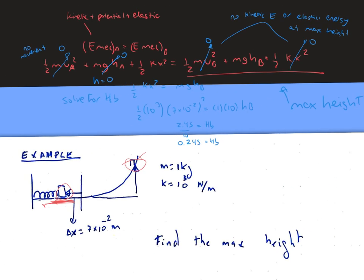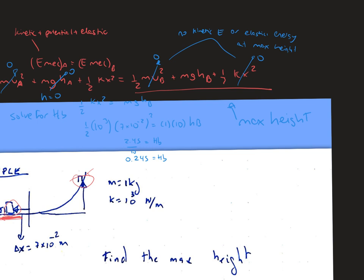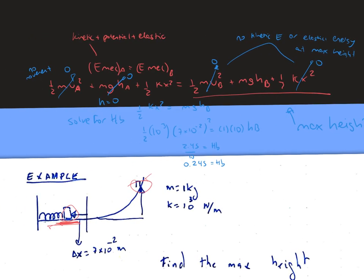On the other side, m v_B² is going to be zero as well, and k x² is going to be zero. That is because there's no kinetic energy or elastic energy at the maximum height. Therefore we just solve for h_B.